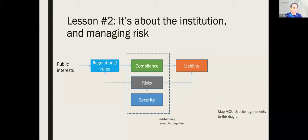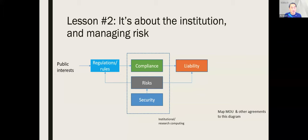Another key lesson we learned through the Accord effort: getting Accord to the point where we could offer service within UVA and with external users, we had to go through stakeholders we didn't think were involved — including insurance, for example. One of the things Ron and I still bear the scars for is that it's all about the institution. We work within the institution, and if we don't make the institution happy, nothing's going to happen. And when it comes to the institution, it's all about managing risk.